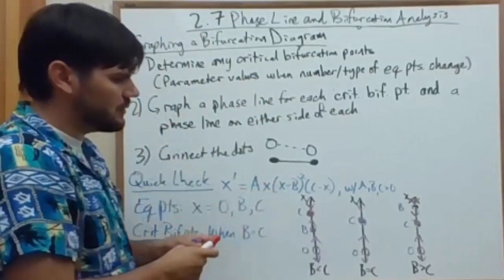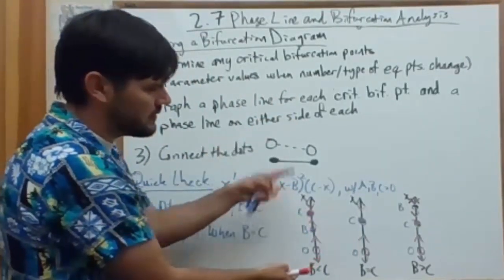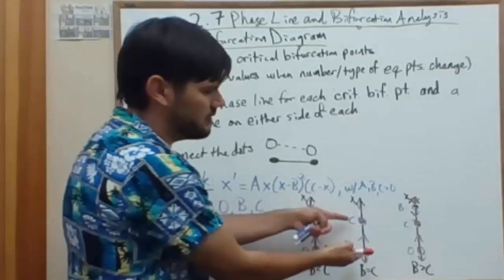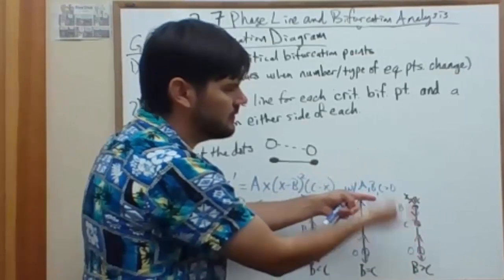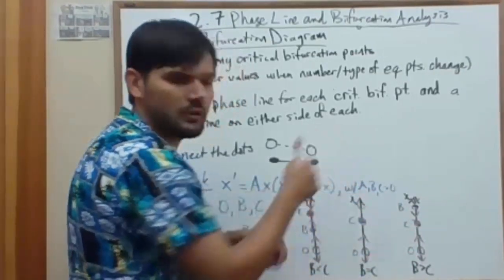So let's look at the dynamics. We shift from three equilibrium points, one stable, one semi, one unstable, to two. One stable, one unstable. Then three again, similar here, but the order is swapped.